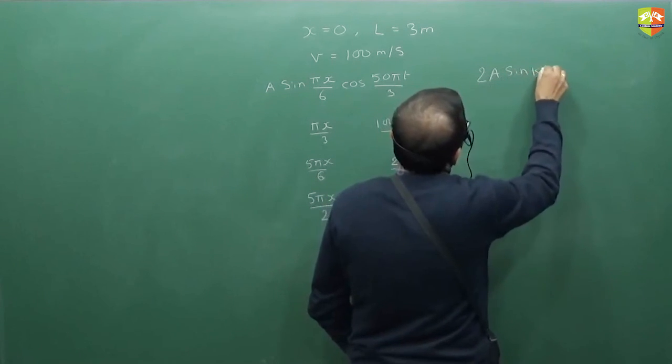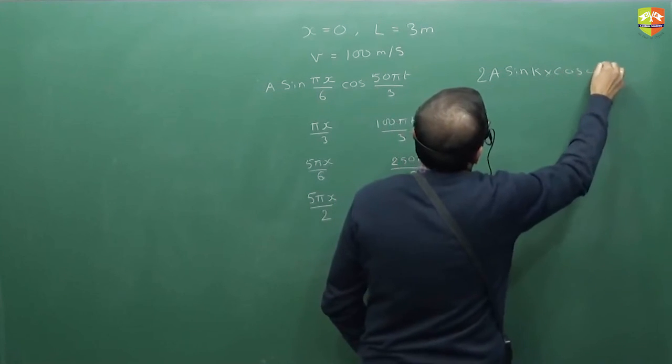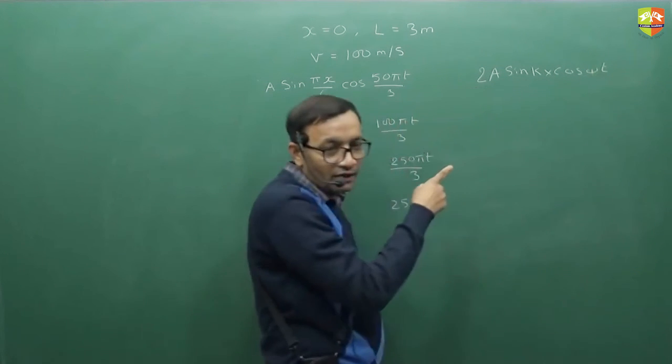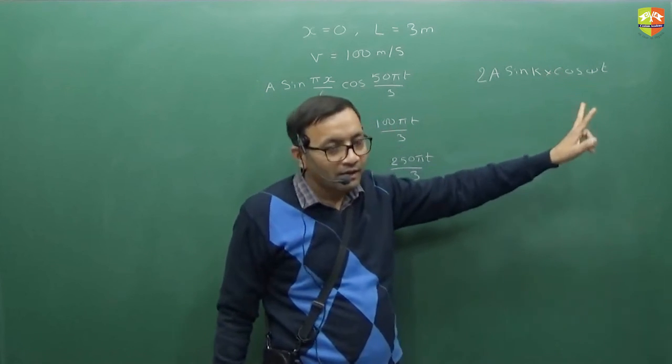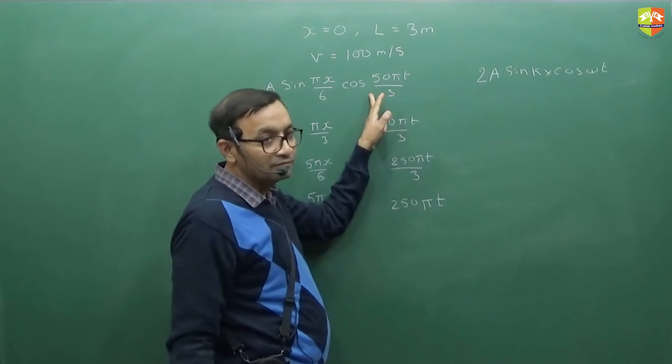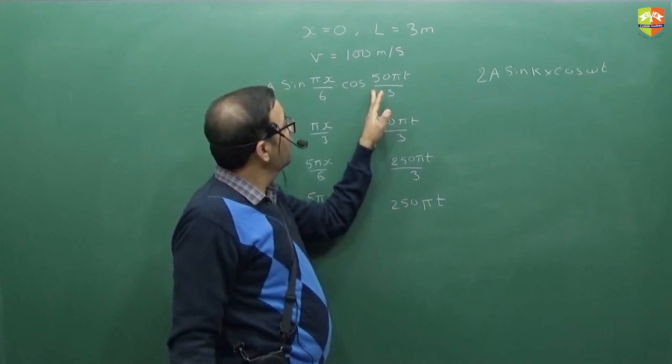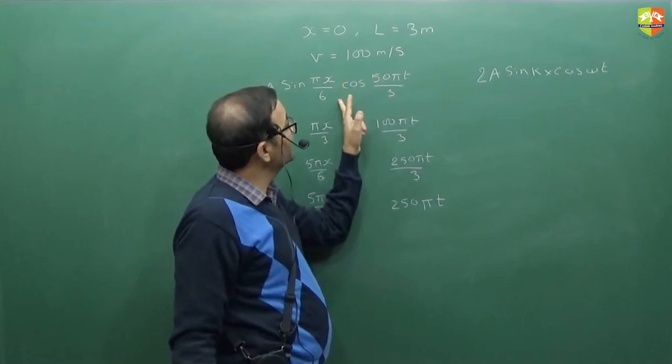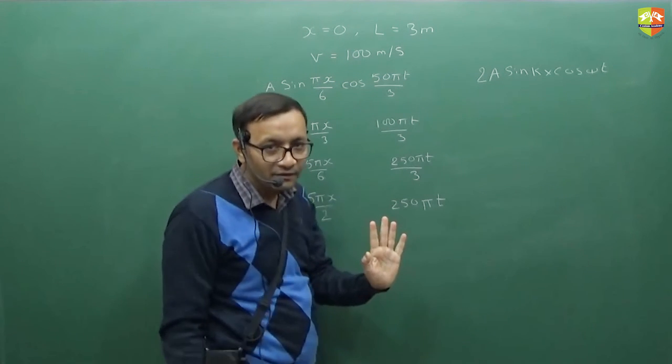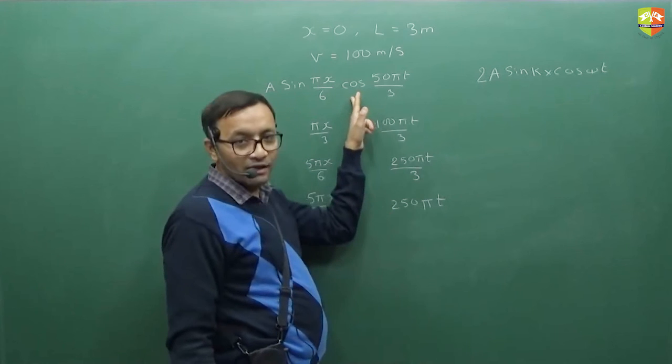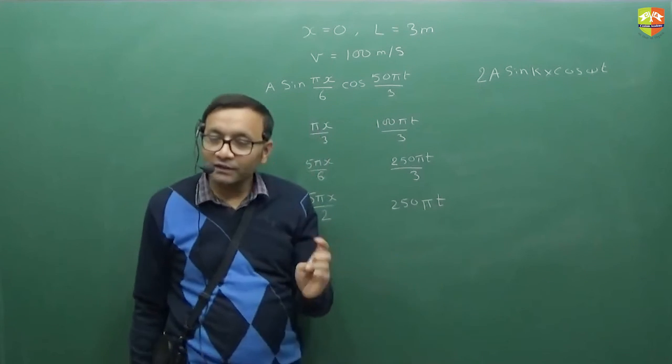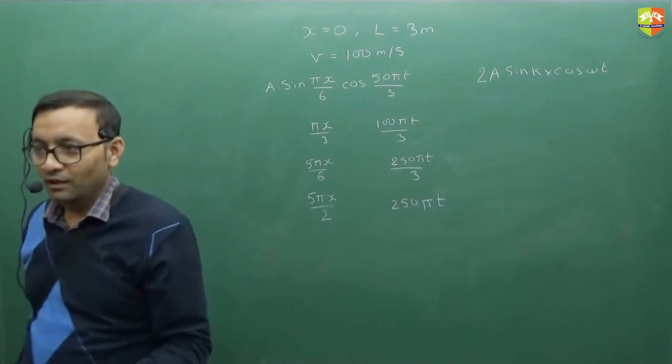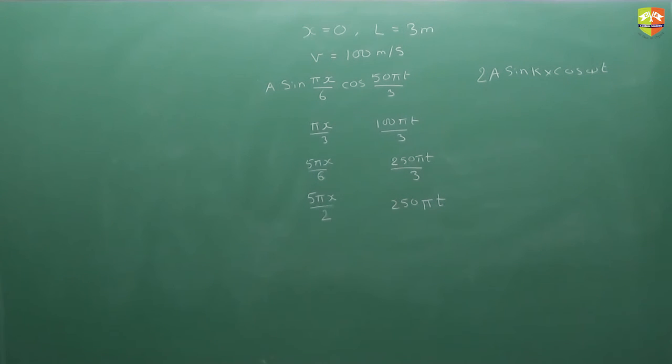2a sin of kx cos of ωt. This is what it is. And velocity of sound is what? Coefficient of t divided by coefficient of x. Is that 100 for the first one? No. 50 by 3 divided by π by 6. 50 by 3 divided by π by 6 is 100, right? So, velocity is 100 here. In fact, all four, velocity is 100 only. So, you can't look at the velocity and pick the options. ω by k for all the four options is 100.